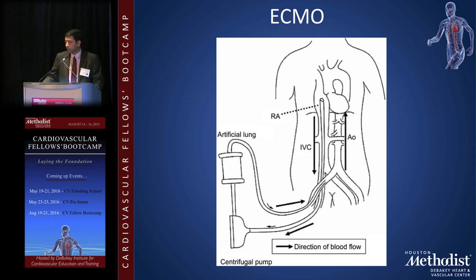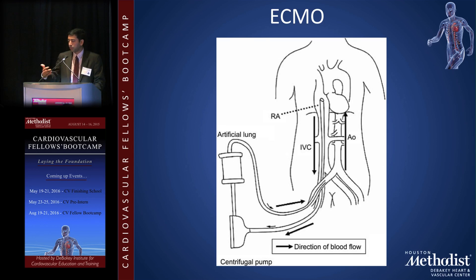ECMO draws inflow from the right atrium and delivers outflow into the aorta — essentially a small cardiopulmonary bypass machine providing oxygenated blood flow. This is the preferred option for a patient with pulmonary hypertension and a failing right ventricle being bridged to possible lung transplantation.